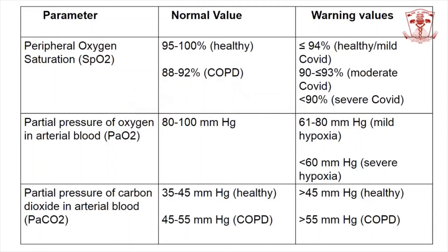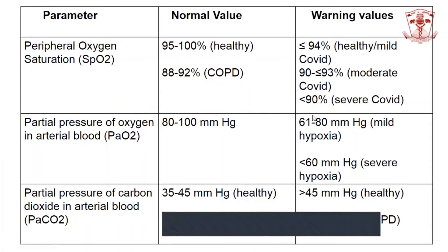Normal SpO2 is 95 to 100%. In a severe COVID patient, SpO2 typically lies below 90%, whereas in a moderate COVID patient, it is in the range of 90 to 93%. The normal PO2 value is around 80 to 100 mmHg; in severe hypoxia it is found below 60 mmHg, and in mild hypoxia it fluctuates between 61 to 80 mmHg. Normal PaCO2 is 35 to 45 mmHg, and values above 45 mmHg require immediate attention as a sign of CO2 retention.